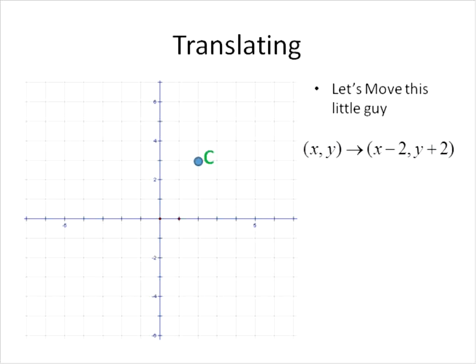So first off we're going to do translating. We're going to move this little guy, point C, to this location. This is our (x, y) and we're going to translate this point to (x - 2, y + 2). That means that we're going to take this point and we're going to start by moving the x-value negative two, one, two, and then our y-value will go up to one, two. So we're going to translate this point to being up here. We call that C with the little doohickey thingy.